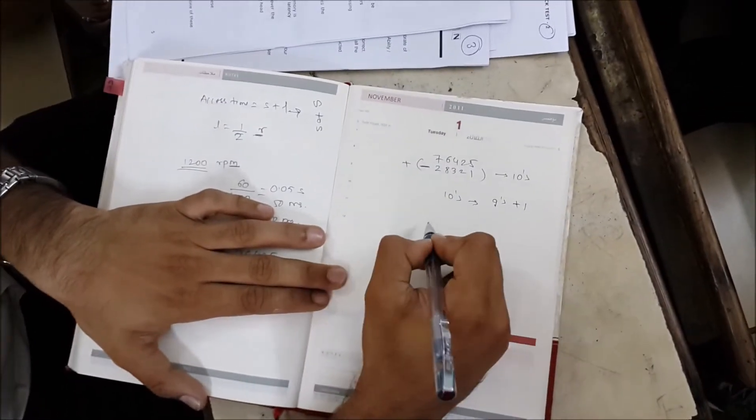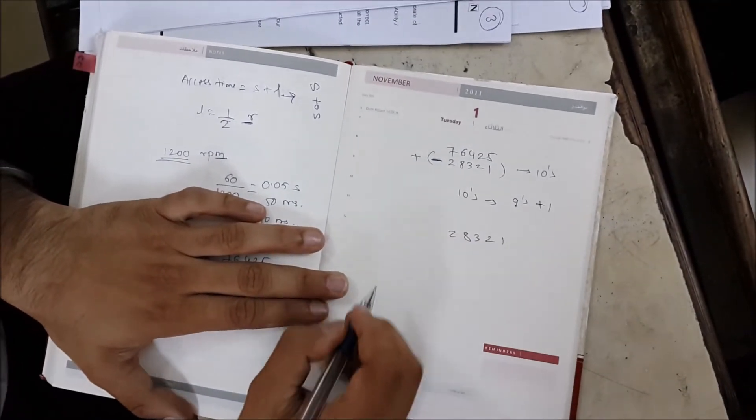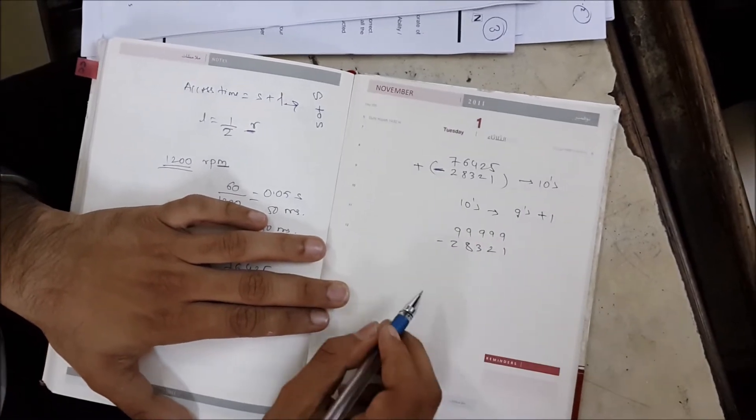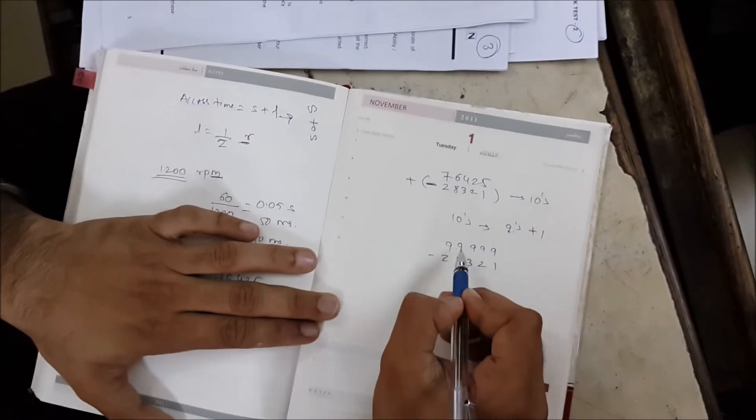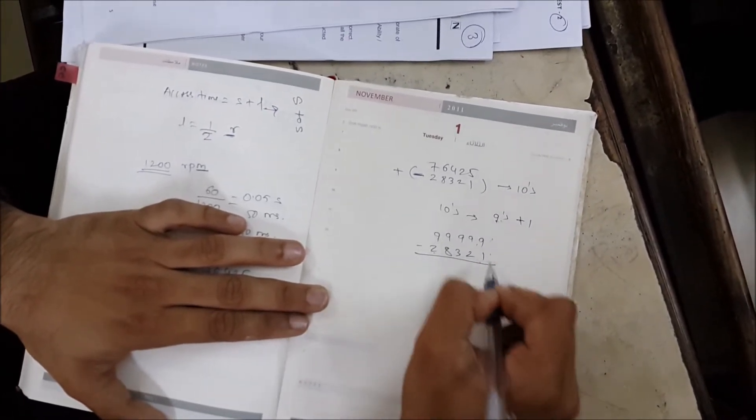Now how to find nine's complement? Take this negative number, which is 28321, and subtract this number from 99999. Since we are going for nine's complement, we have to use all nines. Write the number of nines based on the number of digits, and then subtract this number.